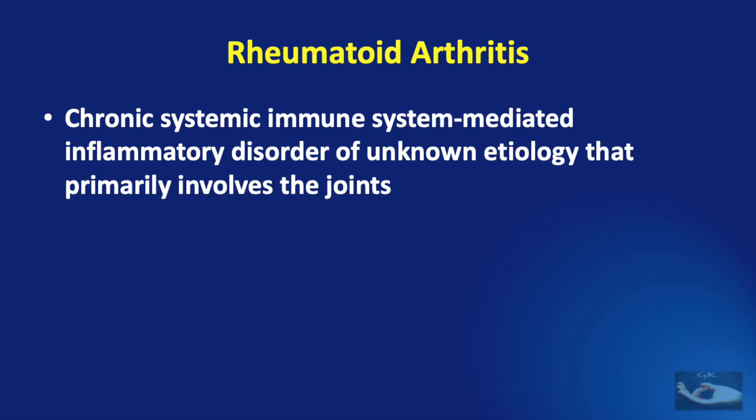Rheumatoid arthritis is very simply a chronic, systemic, immune system-mediated inflammatory disorder of unknown etiology that primarily involves the joints. First, it is a chronic disease. Rheumatoid arthritis with a symptom duration of fewer than six months is defined as early rheumatoid arthritis, and when symptoms have been present for more than six months it is defined as established rheumatoid arthritis.